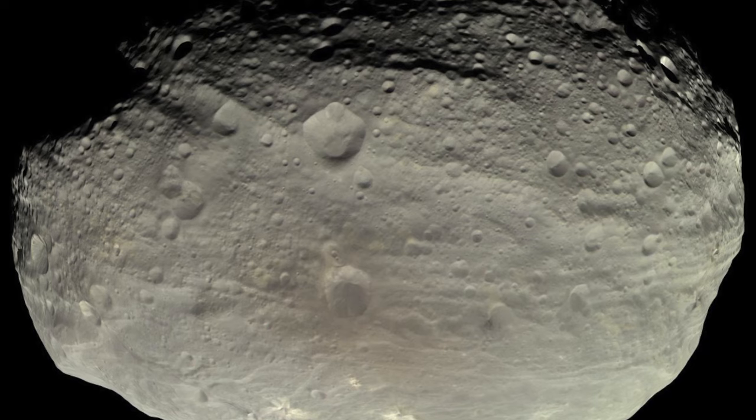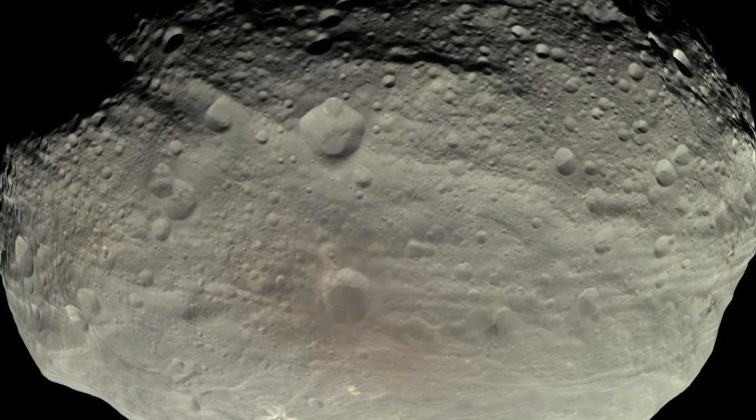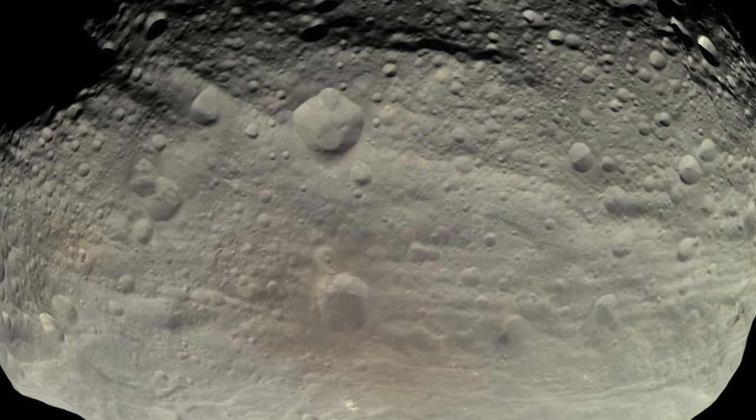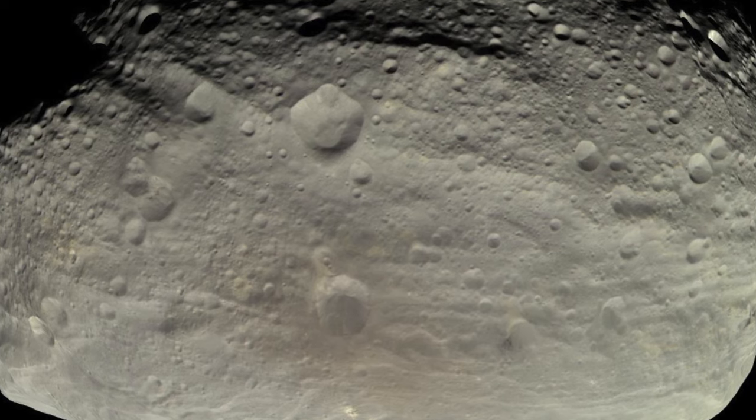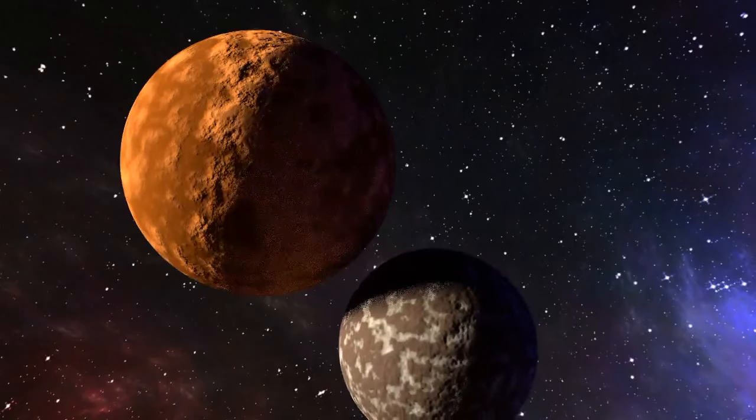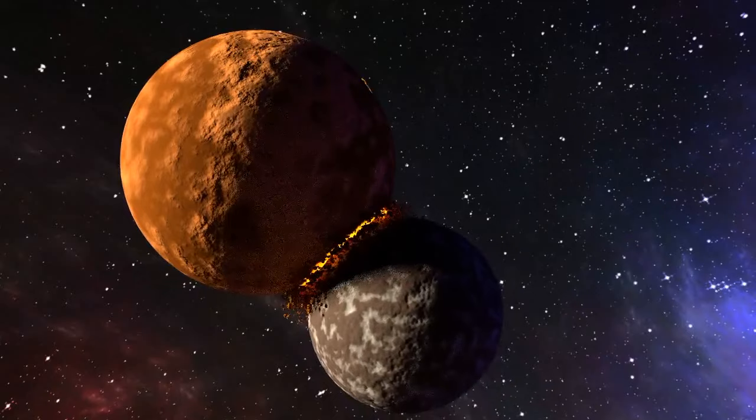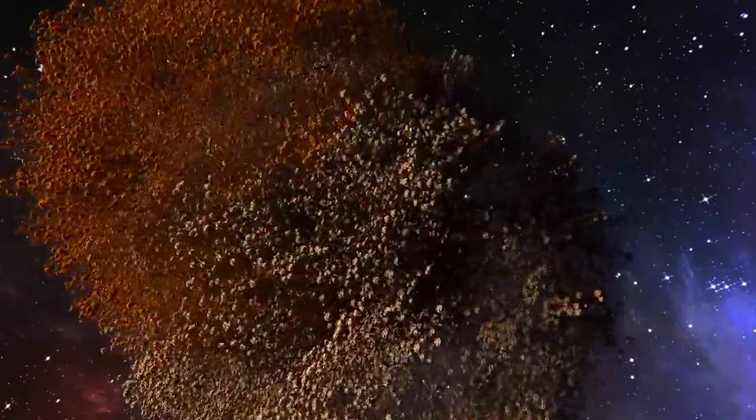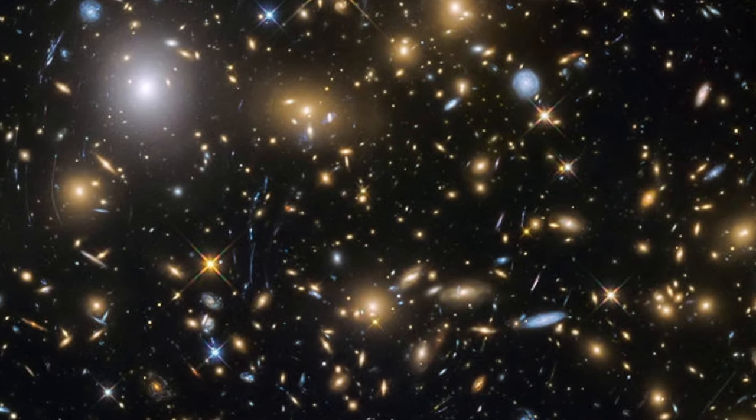Even large asteroids losing dust somehow wouldn't last long on astronomical scales, so the best current working hypothesis is that it's two objects, giant asteroids perhaps, repeatedly smashing into each other and intermittently generating dust. But this may not cover all aspects of what's being observed, so for now, it remains an unknown.